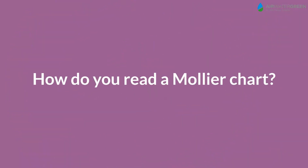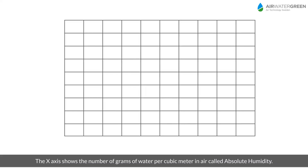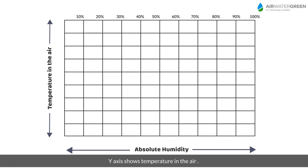How do you read a Mollier chart? The x-axis shows the number of grams of water per cubic meter in air, called absolute humidity. The y-axis shows temperature in the air.